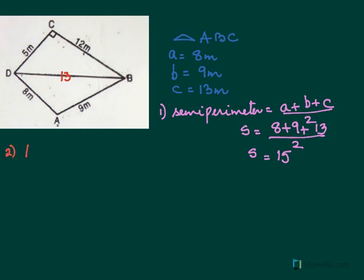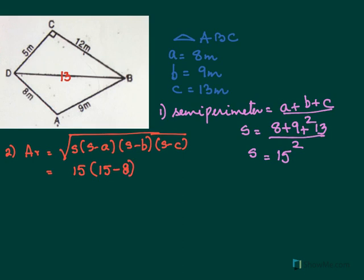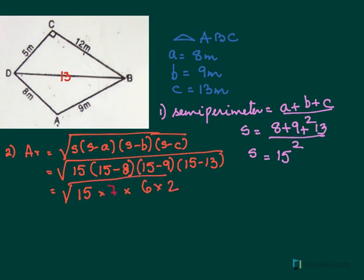Now for the second step, we know our area formula, Heron's formula: square root of S times S minus A times S minus B times S minus C. Your S is 15. And this would be now 15 minus 8, 15 minus 9, and 15 minus 13. So here again, it would be 15. And 15 minus 8 is 7, 15 minus 9 is 6, and 15 minus 13 is 2.